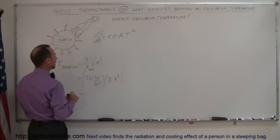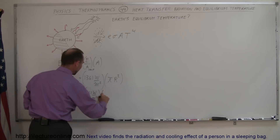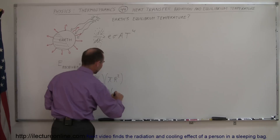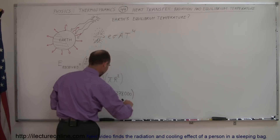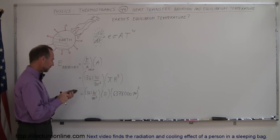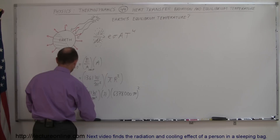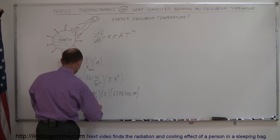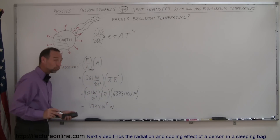This is equal to 1,361 watts per square meter times pi times the radius of the Earth, which is 6,378 kilometers or 6,378,000 meters, squared. So: 1,361 × π × (6,378,000)² equals approximately 1.374 × 10¹⁷ watts — that's joules per second — which is the total amount of energy received from the Sun per second.